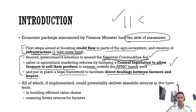These reforms will help make farmers more efficient in the value chain and help them get better returns. It will also help achieve the government's target of doubling farmers' income by 2022.